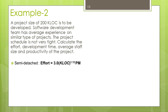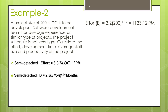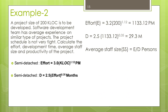This is the expression for finding effort in semi-detached mode. Put the value 200 in place of KLOC and find the effort — the unit of effort is person-months. Now substitute this effort value into the development time equation and find the development time. The development time for this project is 29.3 months. Average staff size is equal to effort divided by development time, so the average staff size is 28.67 persons.